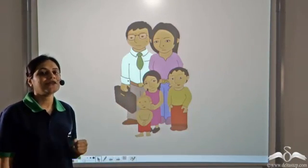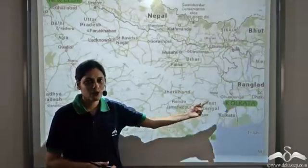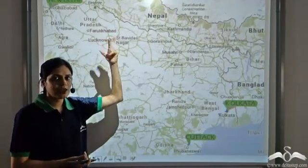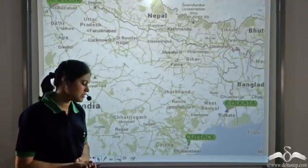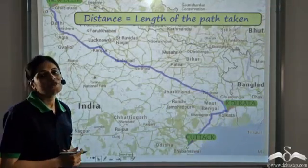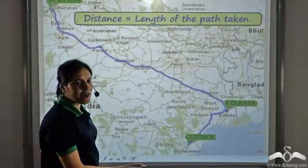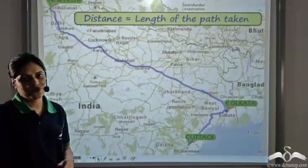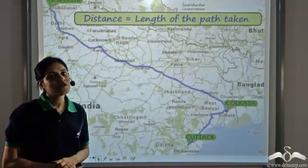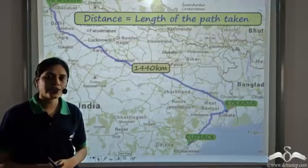This is the Chatterjee family from Kolkata. They decided to go for a trip and had two options: they could go to Katak from Kolkata, or they could go to New Delhi from Kolkata. The length of the path from Kolkata to New Delhi is greater than the path to Katak, so the distance to New Delhi is greater. Since they had a longer vacation, they decided to go to New Delhi, and the distance between Kolkata and New Delhi is 1440 km.